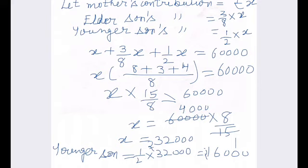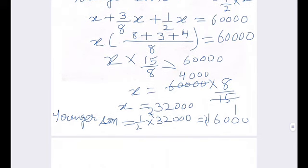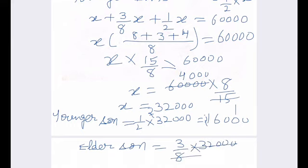And, for elder, what will be the contribution of elder son? So, for elder son, it will be 3/8 of the mother. 4,000. So, it will be 4, 3, 12,000.